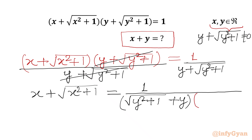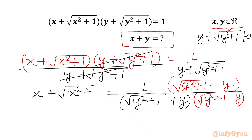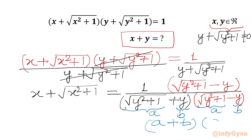To rationalize, I multiply by square root of (y squared plus 1) minus y in both numerator and denominator. In the denominator we get the algebraic form (a plus b)(a minus b), where a equals square root of (y squared plus 1) and b equals y, which equals a squared minus b squared.